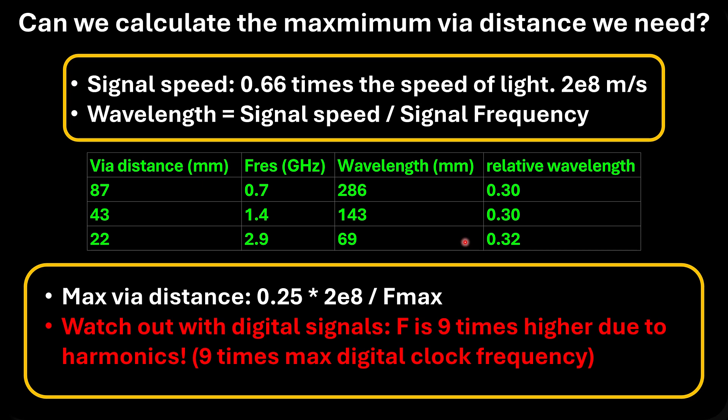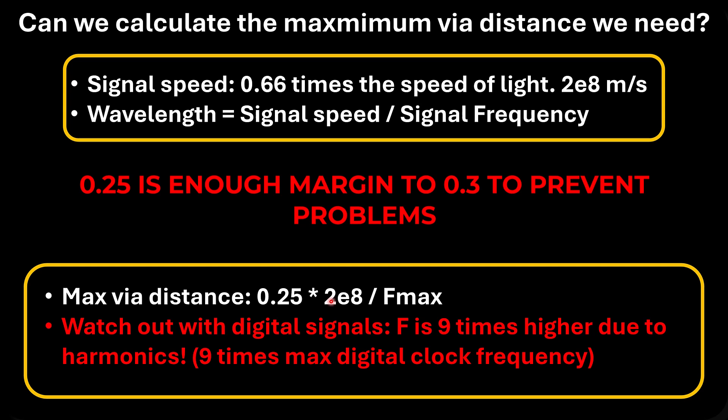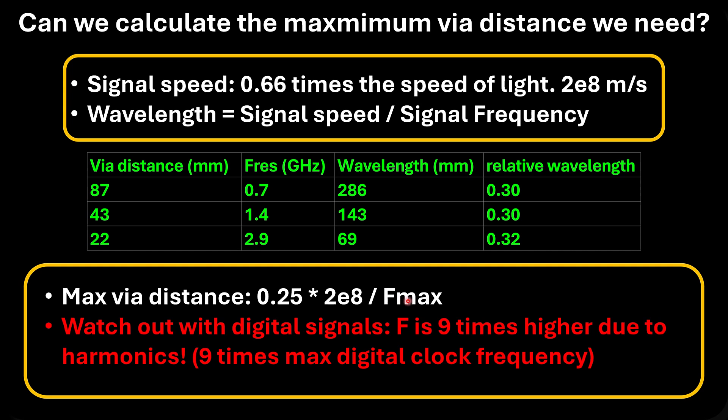This allows us to calculate a safe via spacing. If we place vias at a maximum distance of 0.25 times the wavelength — which is 0.25 times 200,000 meters per second divided by the maximum frequency — then we're safe. Note that result is in meters. Watch out with digital signals: they are square waves with harmonics, and you need at least the ninth harmonic to make a square wave look like a square wave. So you need to plug in a nine times higher value in the formula. For a 100 megahertz clock, you would plug in 900 megahertz in the via distance calculation.